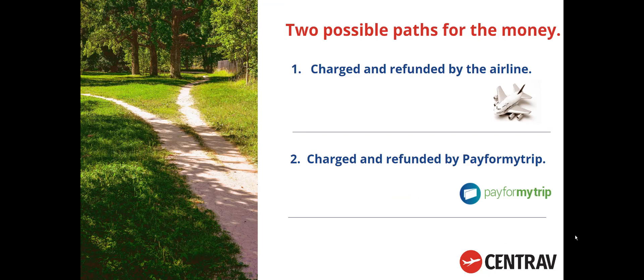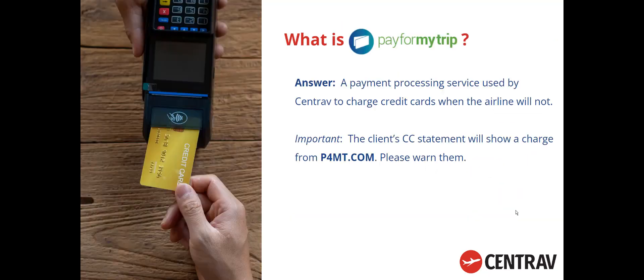First, understand that there are two possible paths for the money when you purchase an air ticket. It's important to know that if the money goes down one path at time of purchase, it'll return down that same path at time of refund. It'll either be charged and refunded by the airline, or charged and refunded by Pay For My Trip.